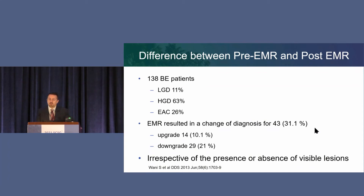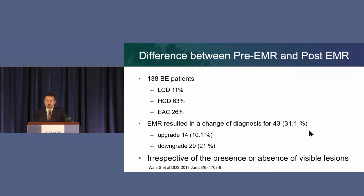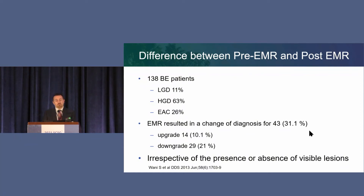Once people started taking out specimens, the question arose: does the pre-EMR biopsy specimen actually correlate with what you take out? If biopsy says high-grade dysplasia, can you assume there's no invasive cancer? In a study of 138 patients — 11% low-grade dysplasia, 63% high-grade, and 26% early esophageal cancer prior to intervention — as a result of EMR, 10% of patients got upgraded. This was irrespective of whether there was a visible lesion or not. So there's a chance the pathology may be more advanced than initially thought.